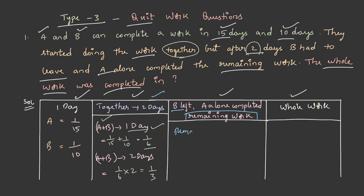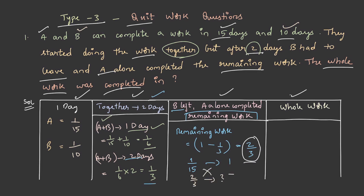Taking the total work as 1, the work done in two days is 1/3, so the remaining work is 2/3. Since A completes 1/15 of the work in one day, how many days will it take A to complete 2/3 of the work? On cross multiplication we get 10 days. But this is not the final answer — the question asks for the total time taken for the whole work.